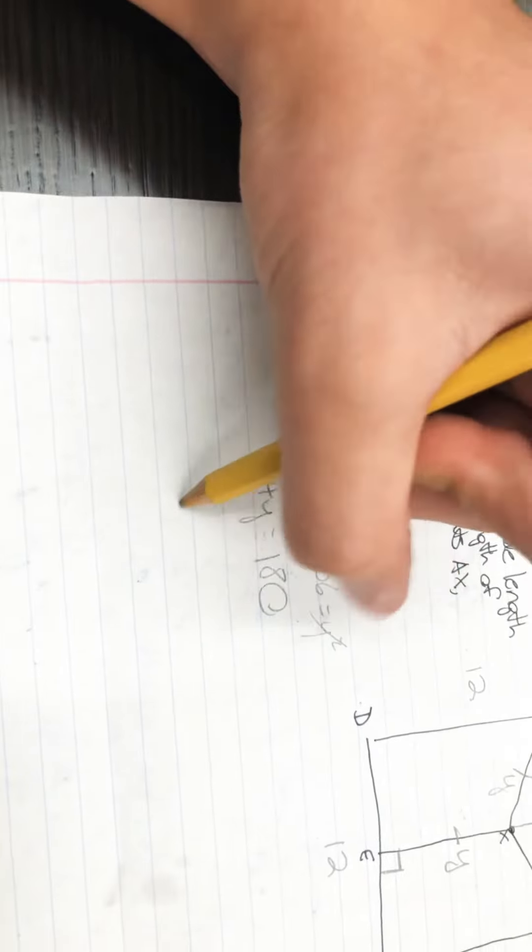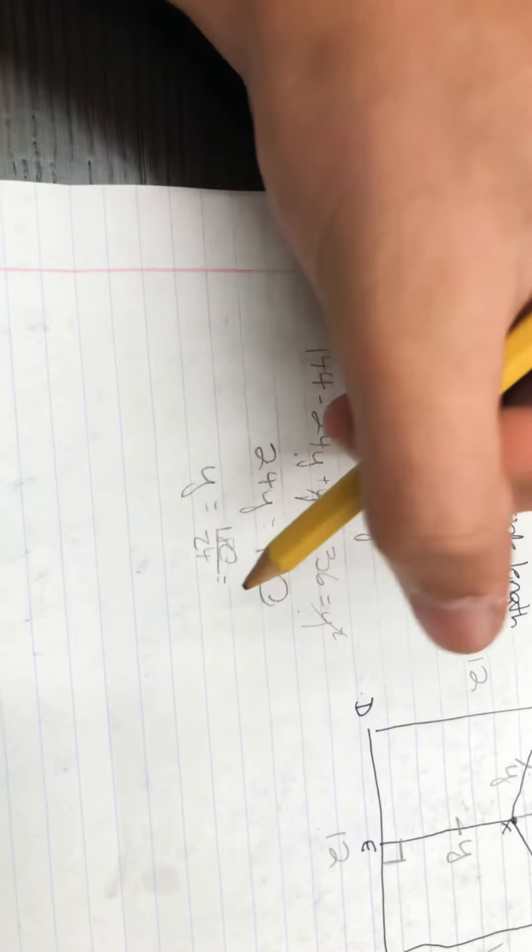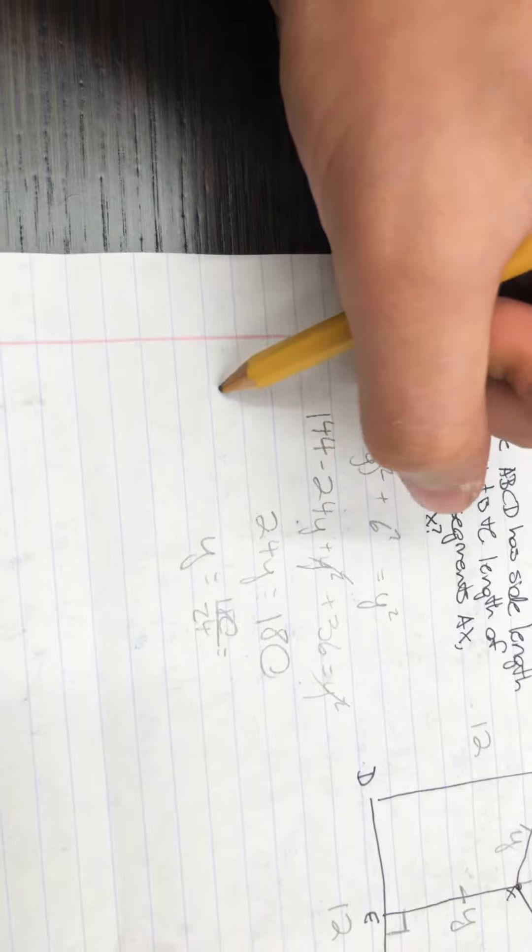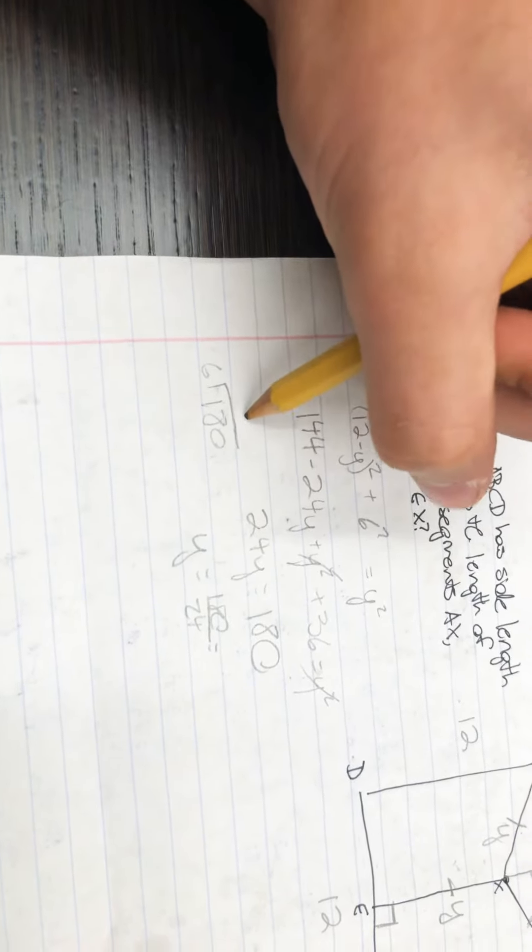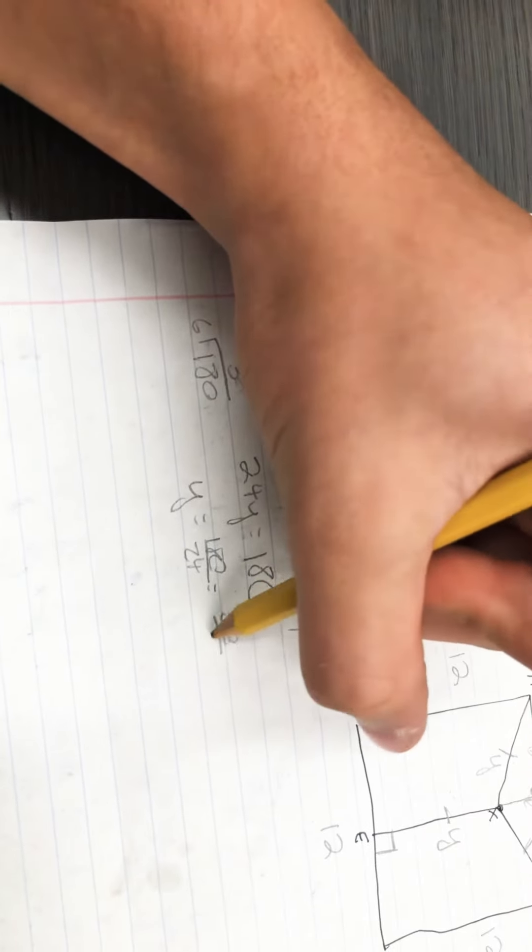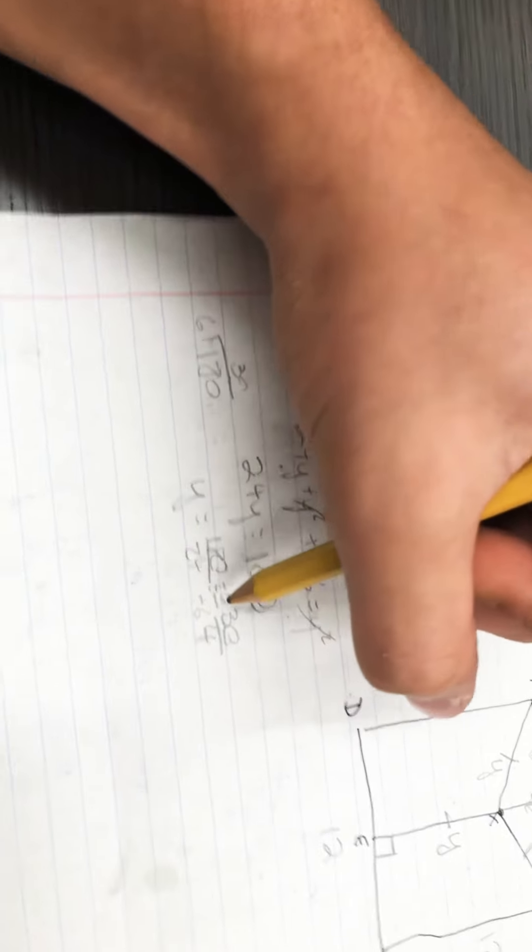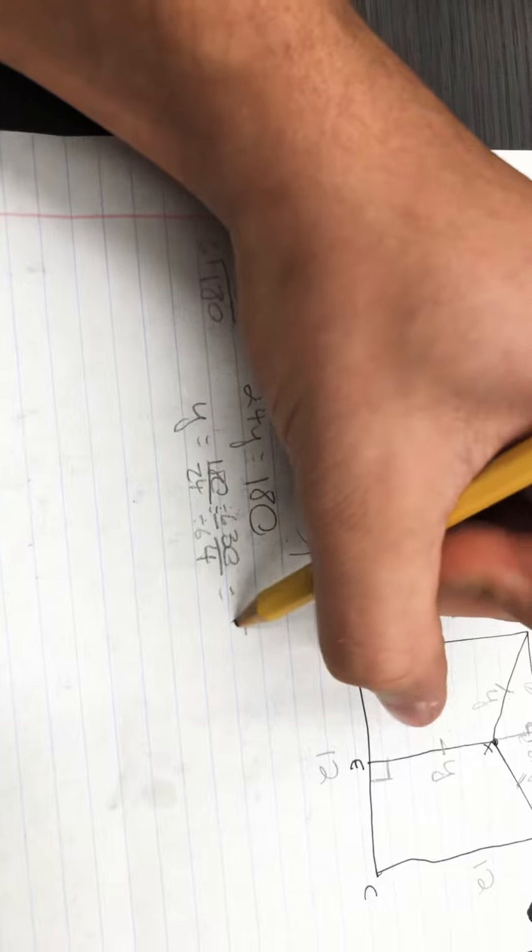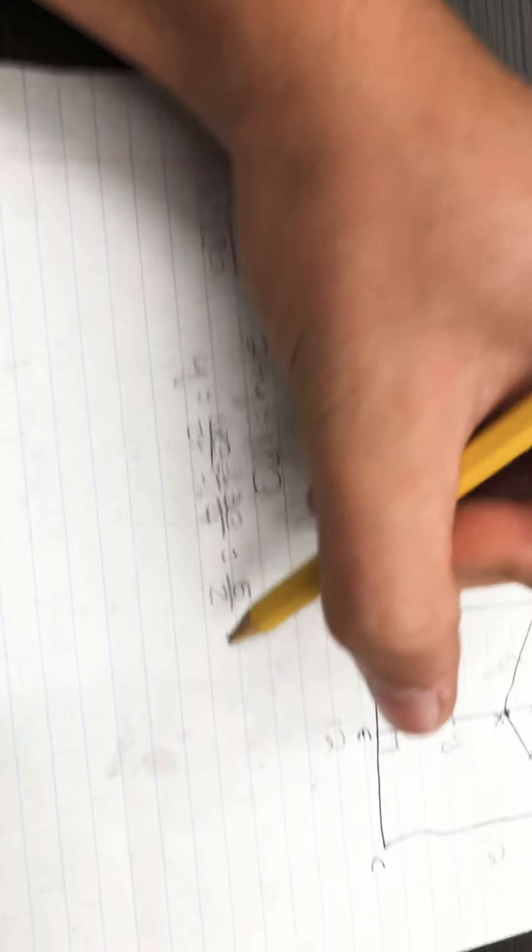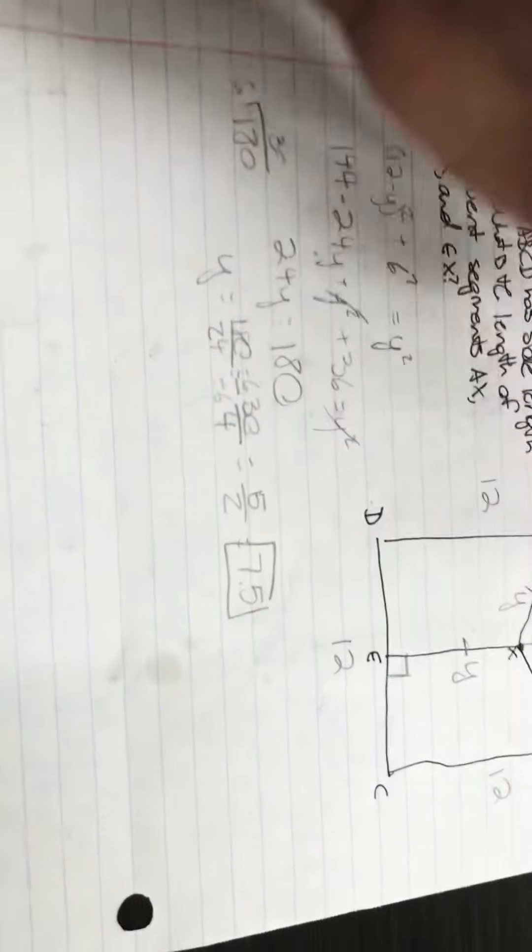That means that Y equals 180 over 24. Can I divide by 6? Yes, I can. I'll end up with 30 over 4 because I divided by 6 on the top and on the bottom. And that is equal to 15 over 2, which you could also write as 7.5. That right there is your answer.